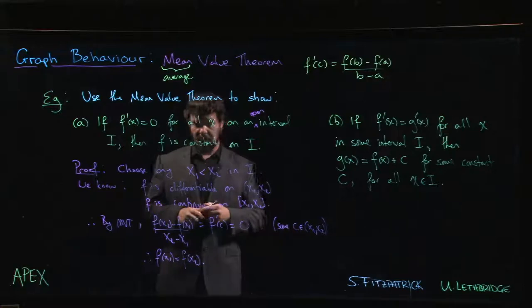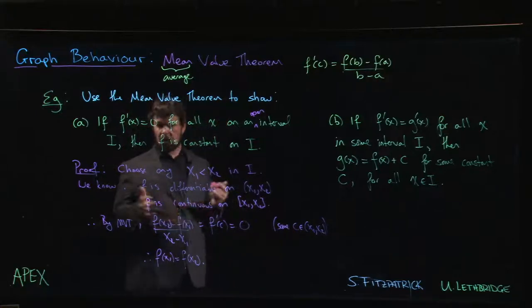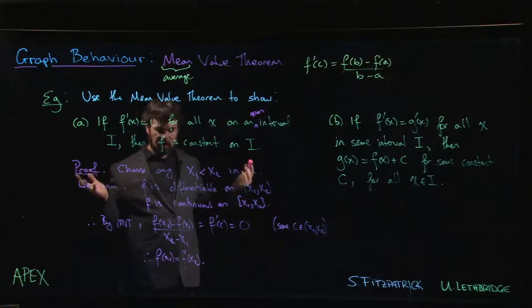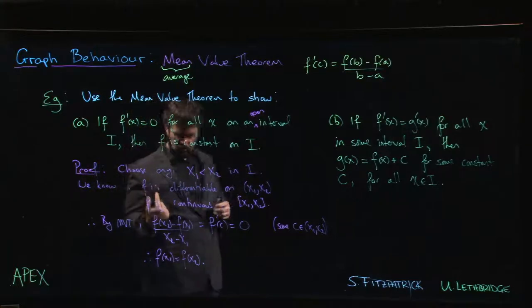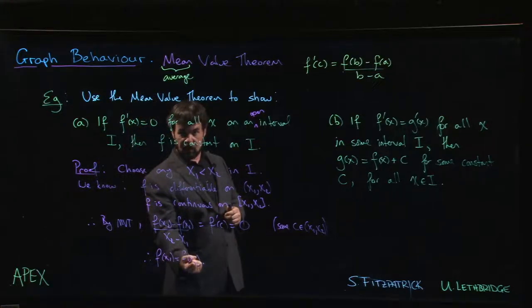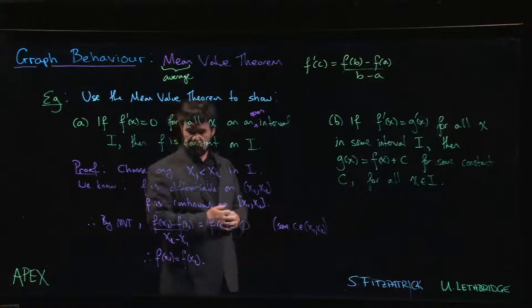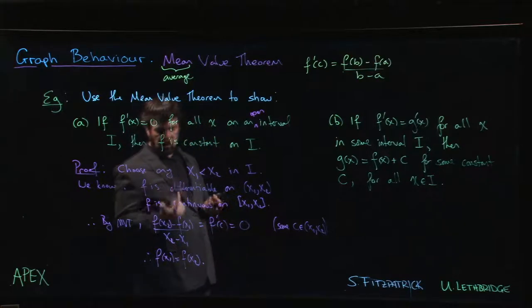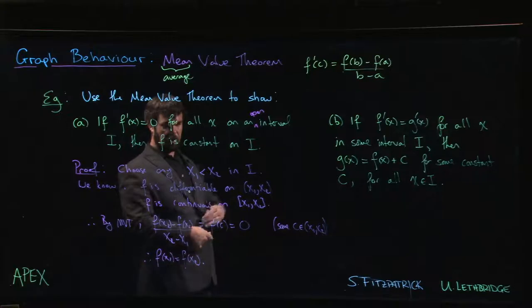Okay, so x1 and x2 are arbitrary - they could be anything. And what we have is that no matter which x1 and x2 you choose, f will have the same value at both. So what we could do is fix that x1 and then let x2 be any other number in the interval.